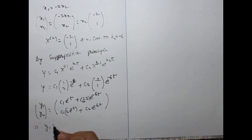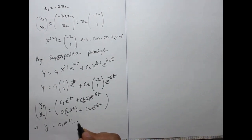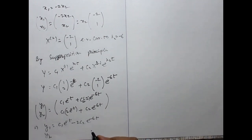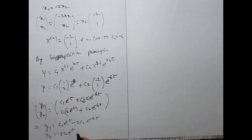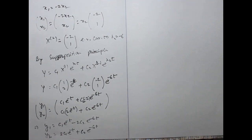Therefore, y1 = c1·e^(−t) − 2c2·e^(−6t) and y2 = 2c1·e^(−t) + c2·e^(−6t).